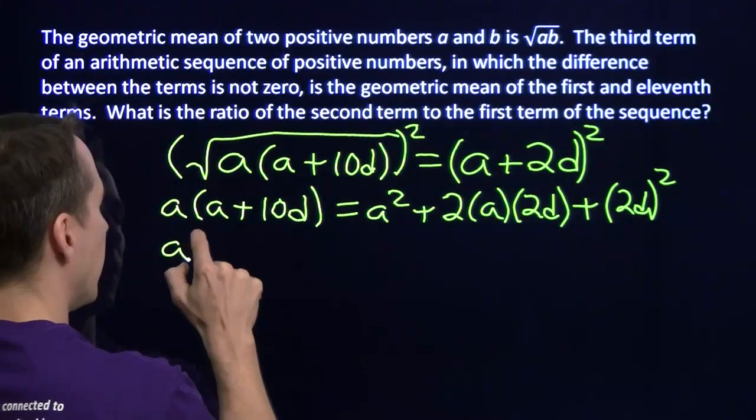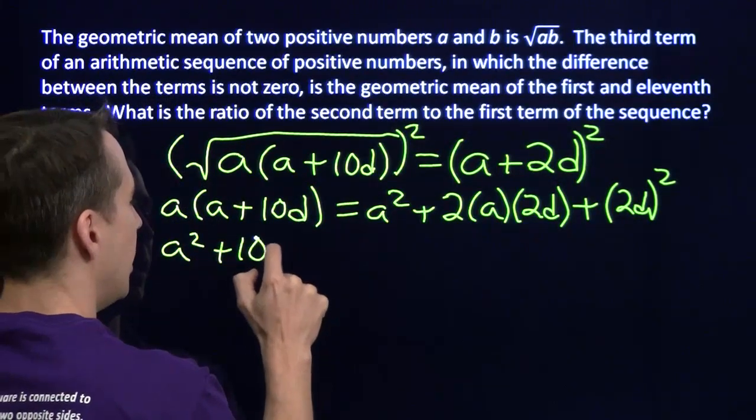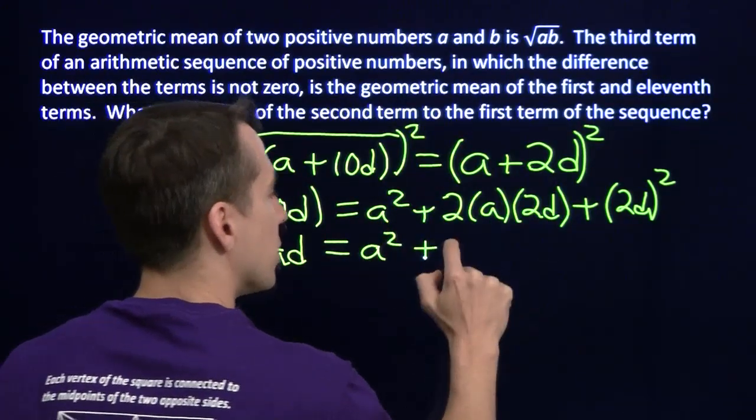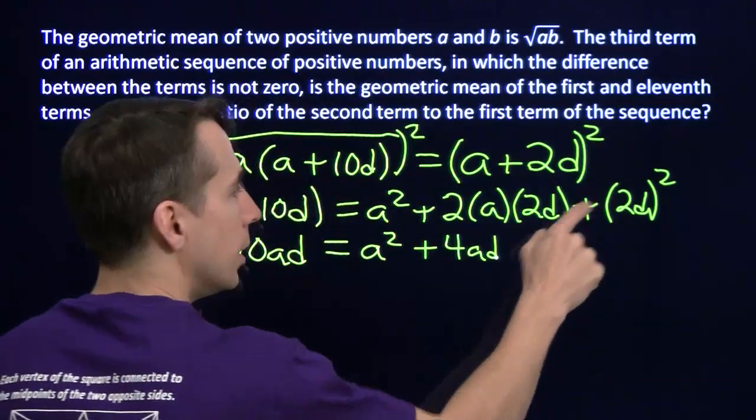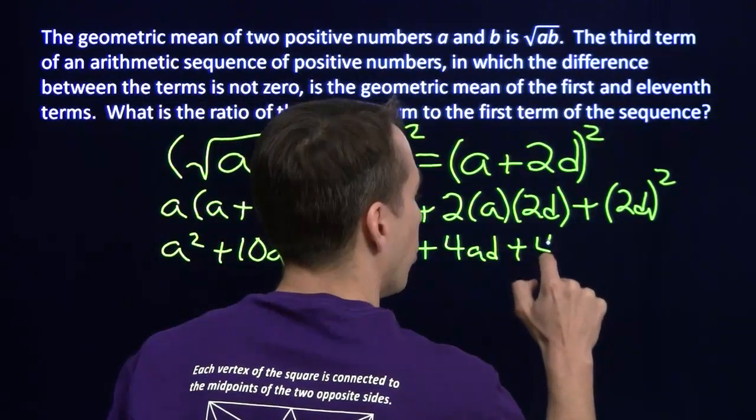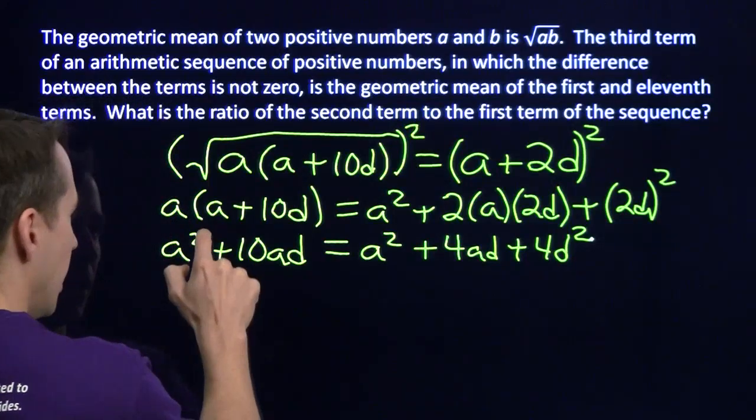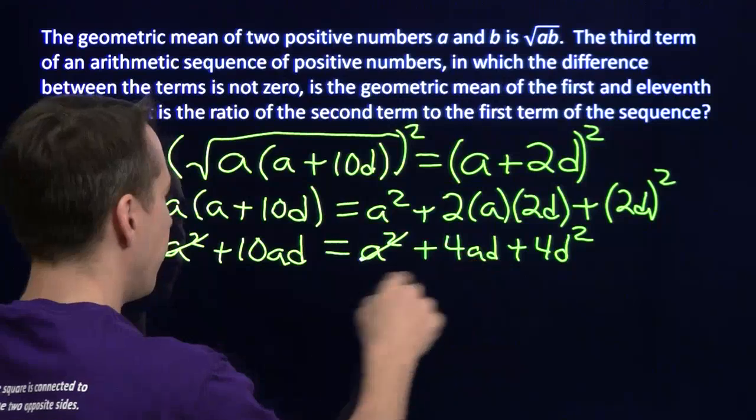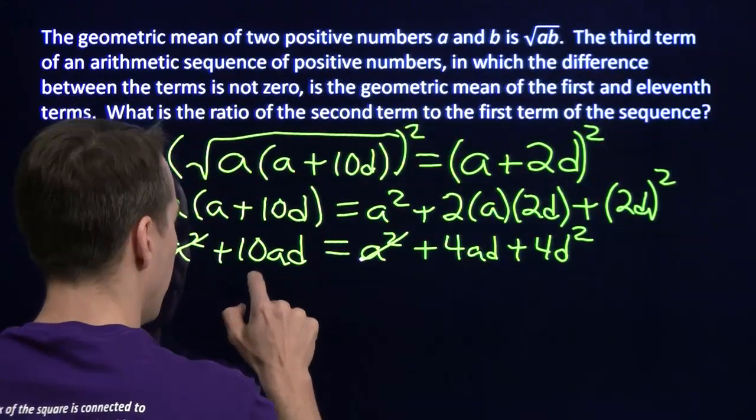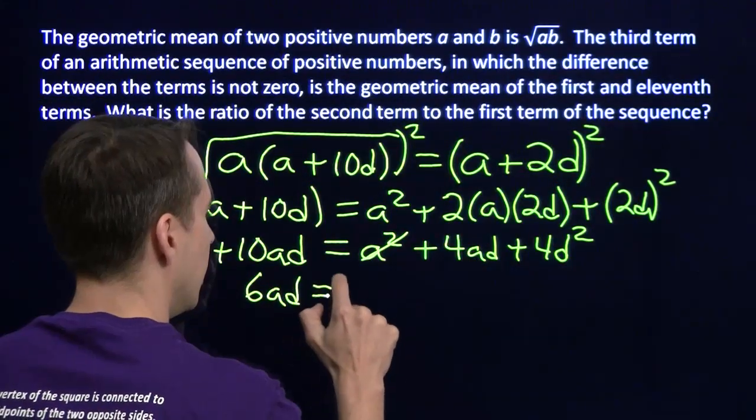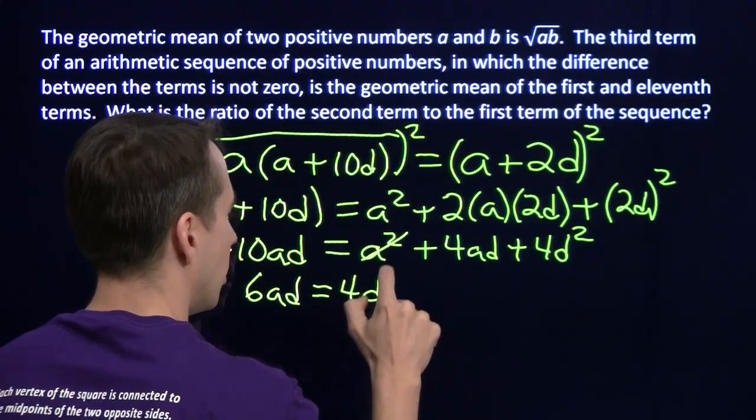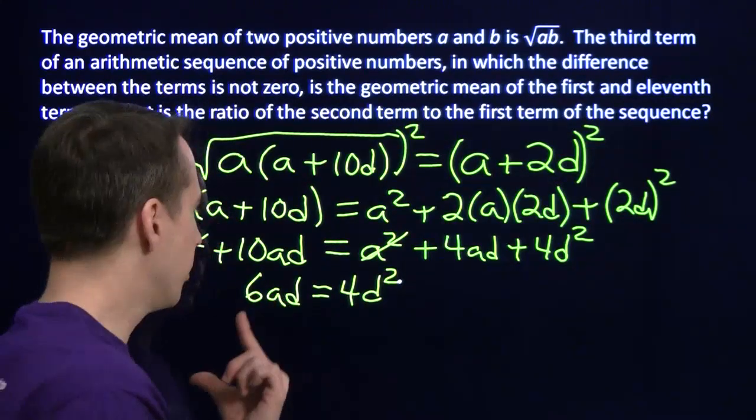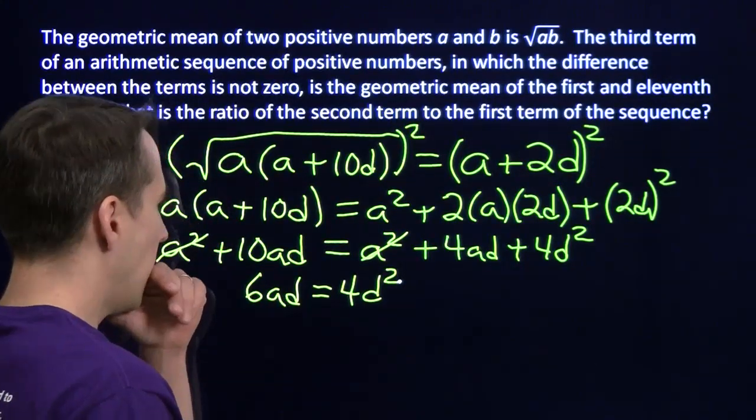Okay, we expand this side. We have A squared plus 10AD. And over here, we still have the A squared. This, we multiply out, we get 4AD. And that, we multiply out, we get 4D squared. All right, the A squares, we subtract A squared from both sides. They'll just cancel out. I can subtract the 4AD from both sides. And I'll have 6AD equals 4D squared. Uh-oh. I can't figure out A or D from this. I'm stuck.